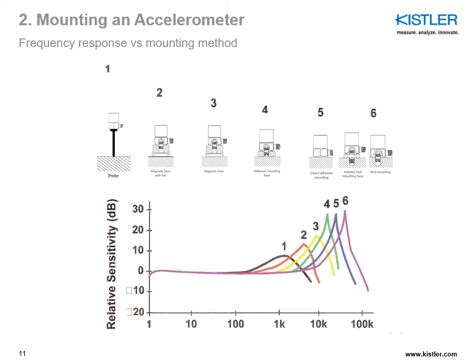Here is a summary of what we just discussed. From left to right, we have the softer mounting to the stiffest mounting. Whenever we calibrate a sensor that can be stud mounted, we always use stud mounting — that's mounting type number six (purple line) — giving the best frequency response. If you use an isolated stud with an integral plate between sensor and mounting surface, that's between five and six, and the resonance peak is fairly close to stud mounting, just a little lower because of the additional plate acting as a mechanical filter.